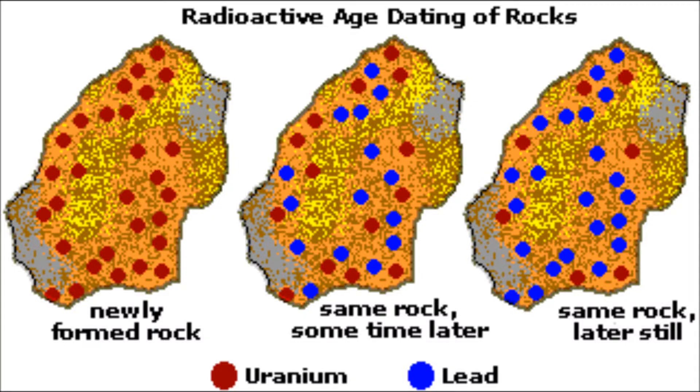Uranium dating is a form of radioactive dating. It's used to find out the age of igneous rocks. Igneous rocks consist of uranium that has a long half-life. Uranium gradually decays into a stable form of lead. The proportion of uranium to lead can determine the age of the rock.